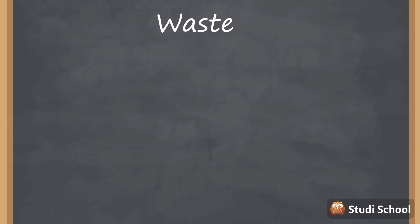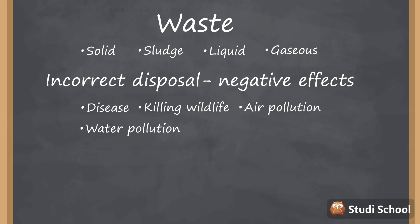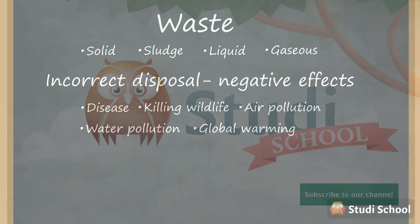Now you know that waste can be categorized into solid, sludge, liquid, and gaseous waste. We also know that incorrect disposal can have negative effects like disease, killing wildlife, air pollution, water pollution, and can even contribute to global warming. That's why it's important to reuse and recycle. So the next time you're getting rid of waste, think about the effect it could have on the environment. Maybe there's a better way to dispose of it.